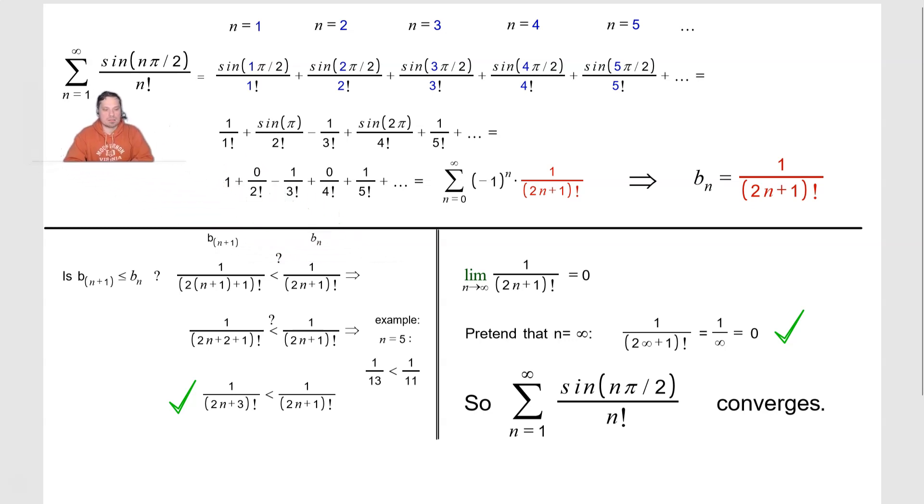This one's going to take a look at determining whether the following sum is divergent or convergent. So it goes from n equals 1 to positive infinity, sine of n pi over 2 divided by n factorial.